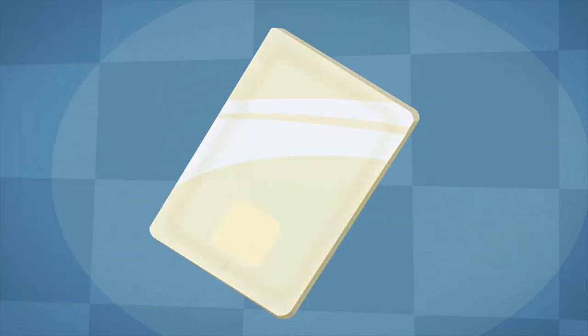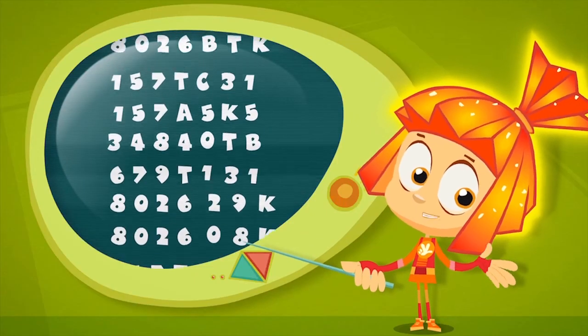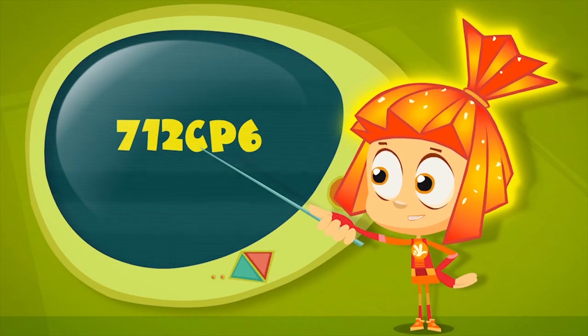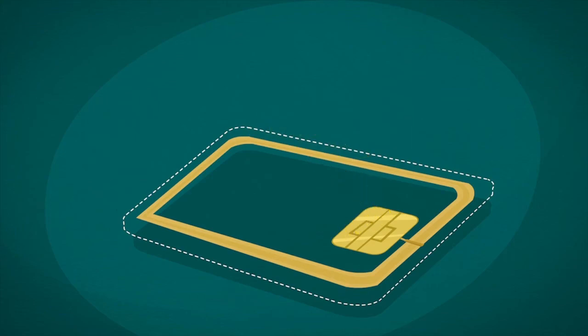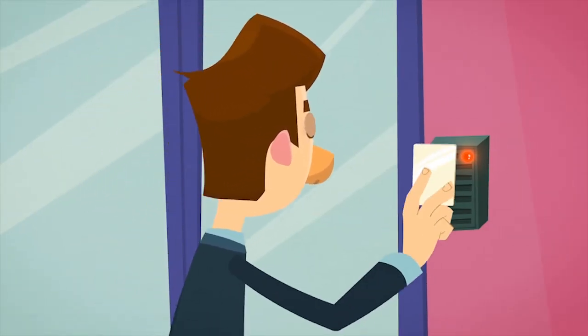But if the lock uses a keycard, there isn't any code to memorize, because the code is held inside the card's memory, and the lock can read the code from the card.